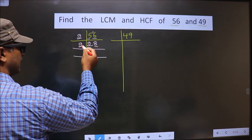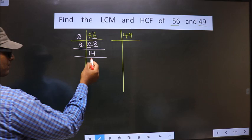Next number is 8. When do we get 8 in the 2 table? 2 times 4 is 8.